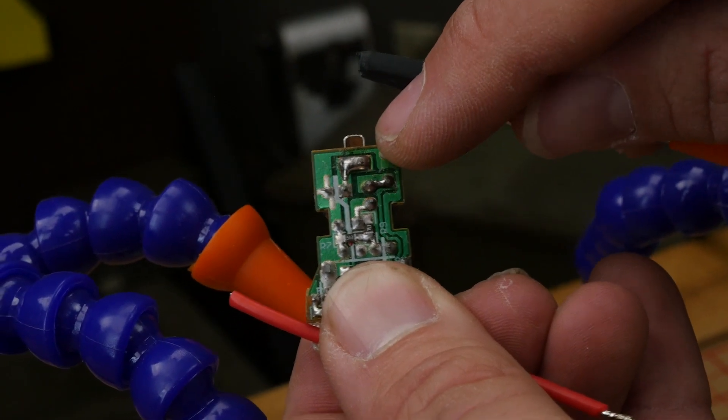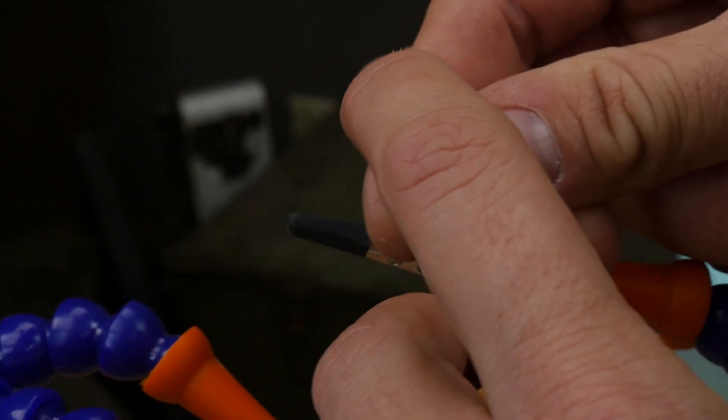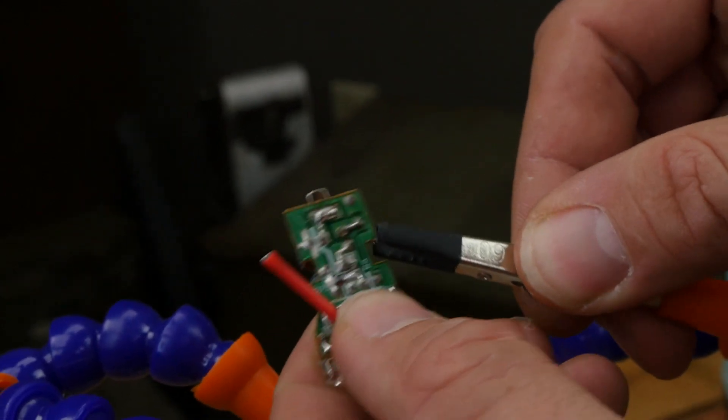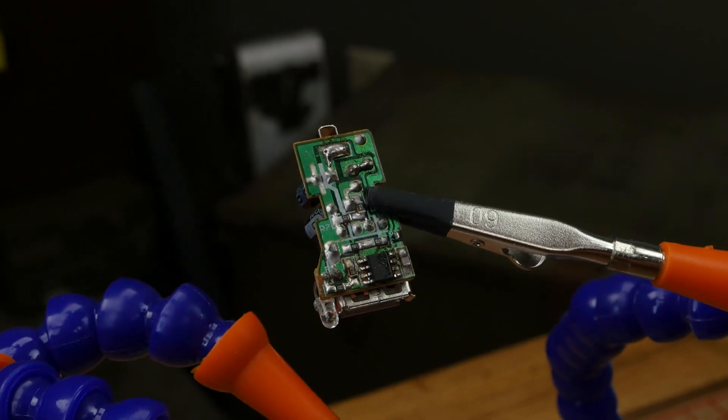This is our positive pad right here. You can see that because on our backside is where our positive node is. We can remove this if we want, but there's plenty of material here. I'm just going to go ahead and solder that right to it.